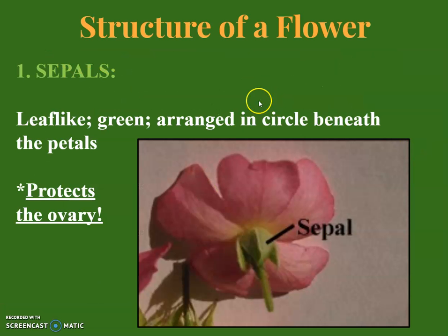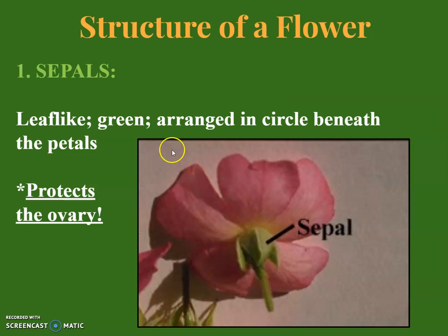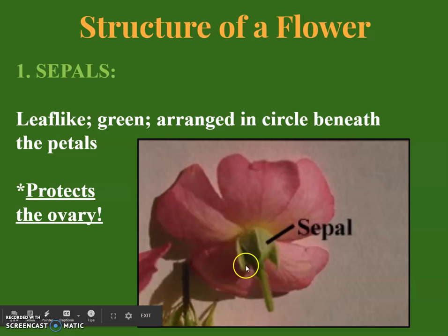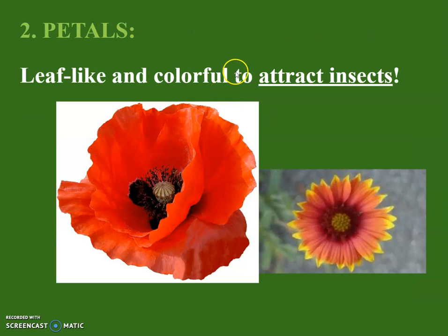First we're going to talk about the sepal, which is at the bottom of the flower. This is a leaf-like green portion arranged in a circle beneath the petals, and it protects the ovary of the flower. Next are the petals, which are leaf-like and colorful, and their main function is to attract insects.